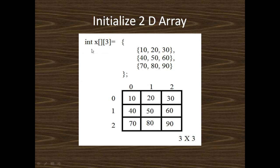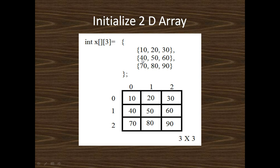Here we declare an integer array named x. The first subscript is dynamic and the second subscript is 3, meaning it can take three columns. We can initialize this matrix as: 10, 20, 30, 40, 50, 60, 70, 80, 90 — row-wise: first row is 10, 20, 30; second row is 40, 50, 60; third row is 70, 80, 90. All values are defined inside a block.